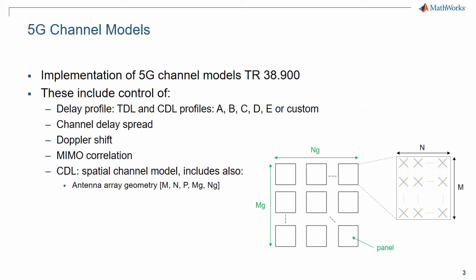MathWorks 5G library ships with the 5G channel models specified in technical report 38.900. This specifies two models for link level evaluations: TDL or tapped delay line and CDL or cluster delay line models. These channels support a bandwidth of up to 2 GHz and are fully parameterizable, giving full control of parameters such as the delay profile, the channel delay spread, Doppler shift, MIMO correlation and others.